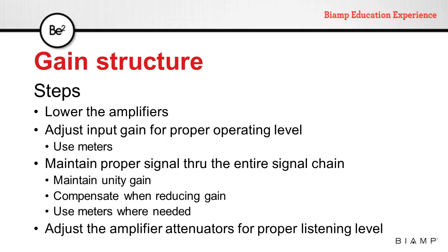The steps are straightforward. First, lower or turn off your amplifiers. Then adjust the input gain for proper operating level — use meters and make certain the incoming signal is reaching near 0 dB. Then maintain proper signal through the entire signal chain, maintaining unity gain through all processes, compensating when reducing gain, and using meters wherever needed. Lastly, adjust the amplifier attenuators for the proper listening level.